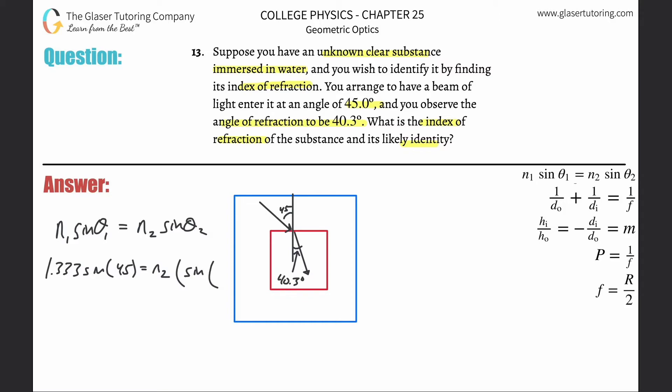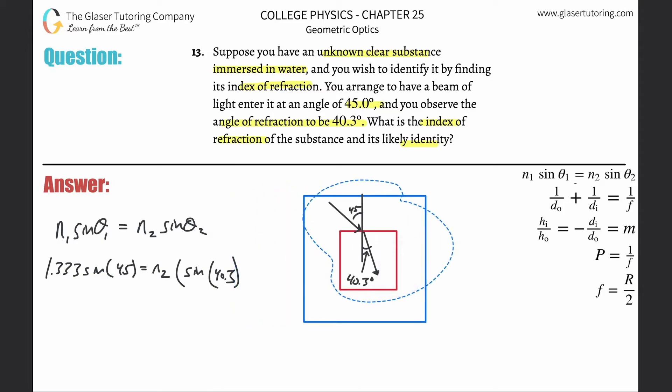The n2 is what we're solving for, then multiply that by the sine of the refracted ray, 40.3°. All we need to do is calculate, so n2 will be equal to 1.333 times the sine of 45°, then divide that by the sine of 40.3°.